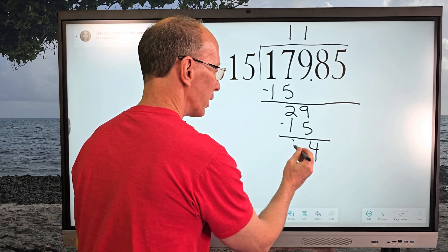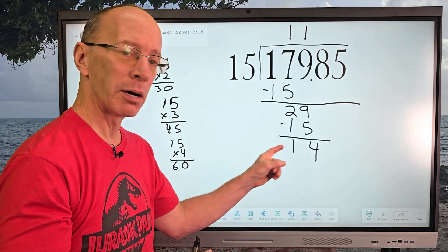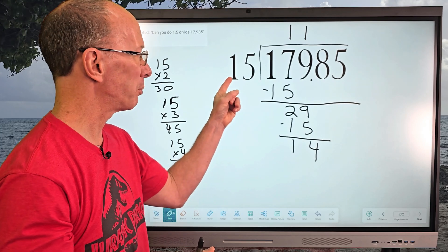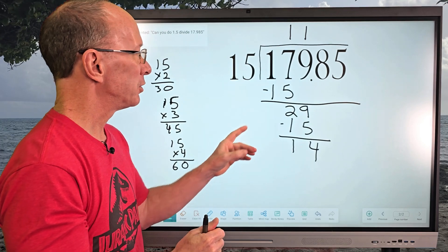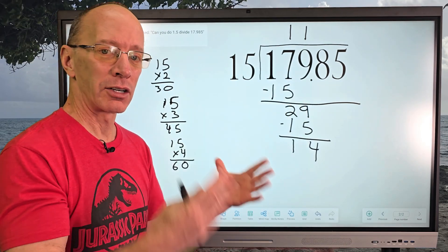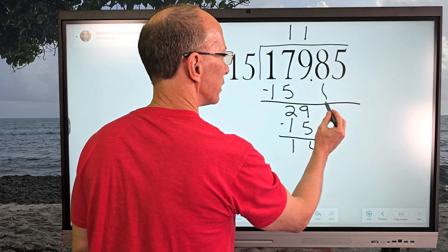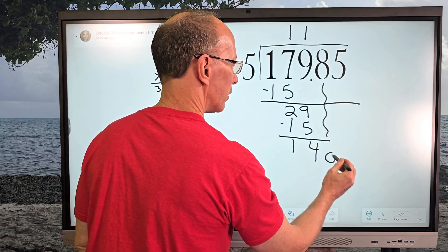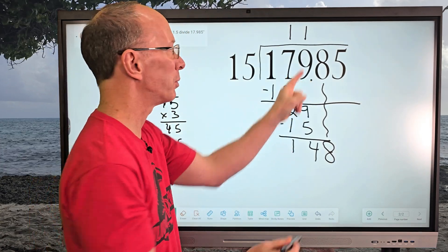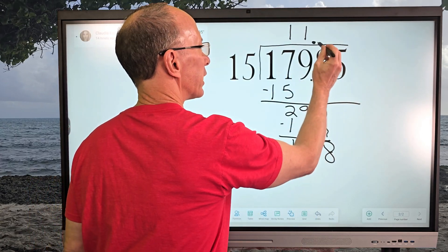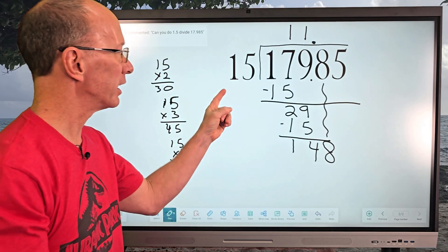Don't get nervous if you have a double-digit number here — we can't put 15 into 14, so we know we did our subtraction right. We need to drop the next number down, which would be the 8. We also have to take that decimal point and put it into our answer, so our next number is going to be on that side of the decimal point.